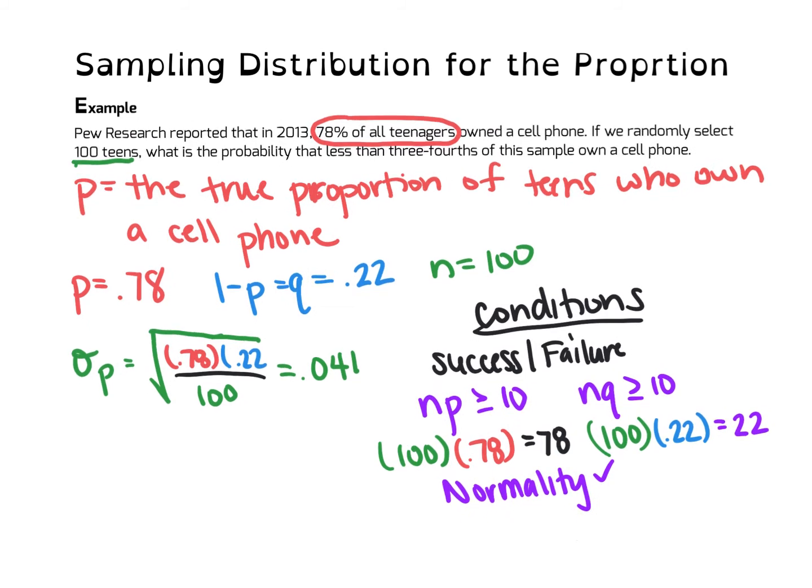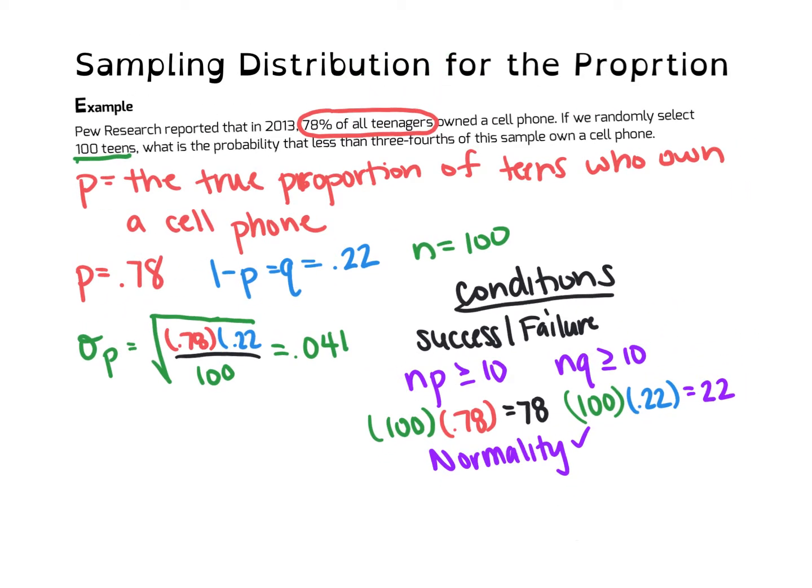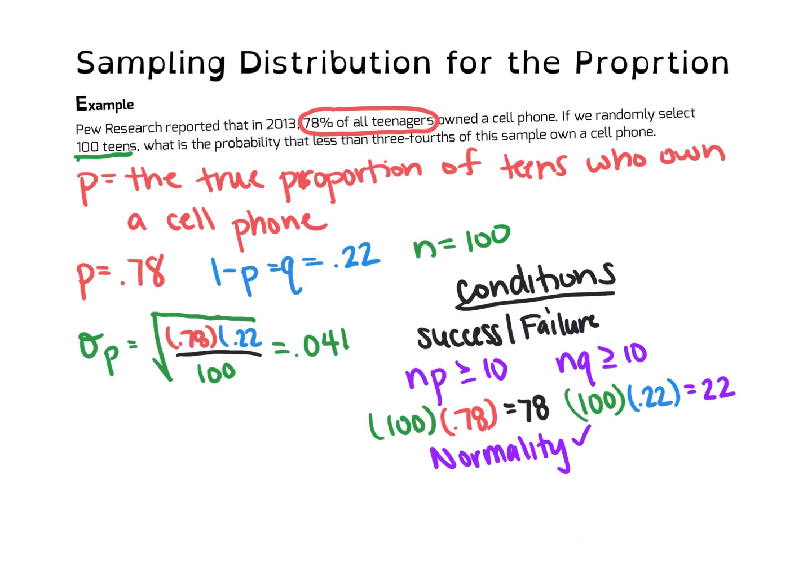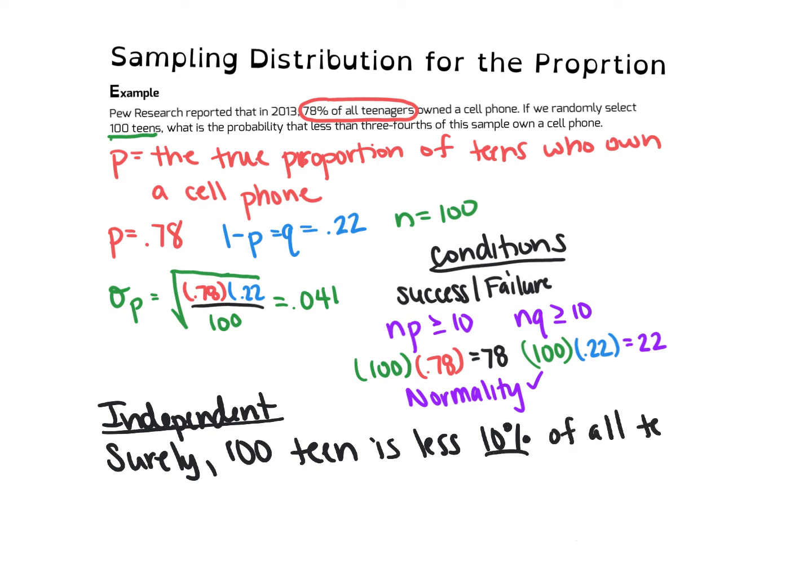The other thing I want to check is that they're independent. And to check that it's independent, we're going to state that we're not sampling more than 10% of the population. So, the independent condition says, surely, we always start off by saying surely, surely 100 teens, the sample size that we've taken, 100 teens is less than 10%. The 10% rule, we call this, is less than 10% of all teens who own a cell phone. So, we state that. This shows that we're saying the sample is independent. We recognize that it's independent.